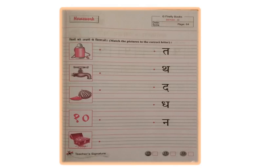Let's match the objects along with the Vyanjans written on their right-hand side. Now, this activity we are going to do in page number 64 from Hindi My Skill Book.